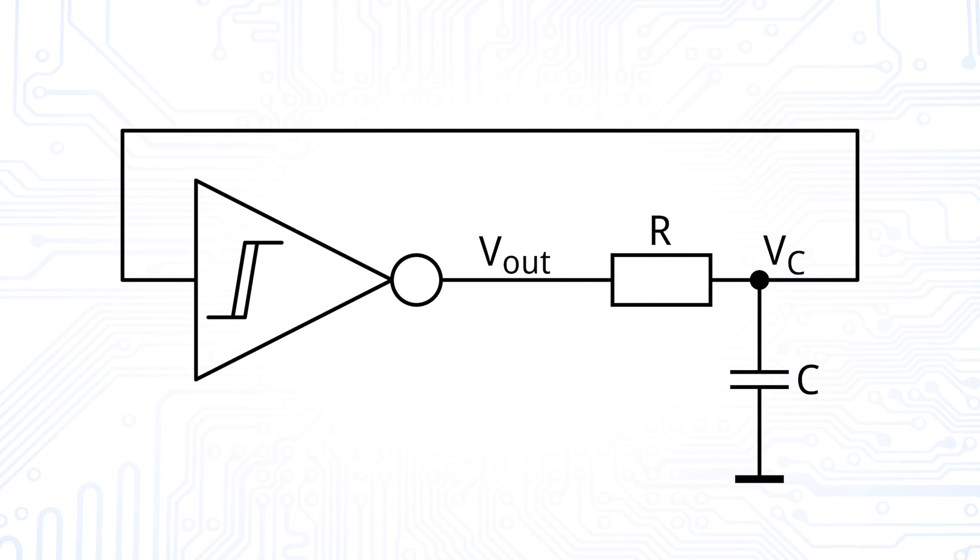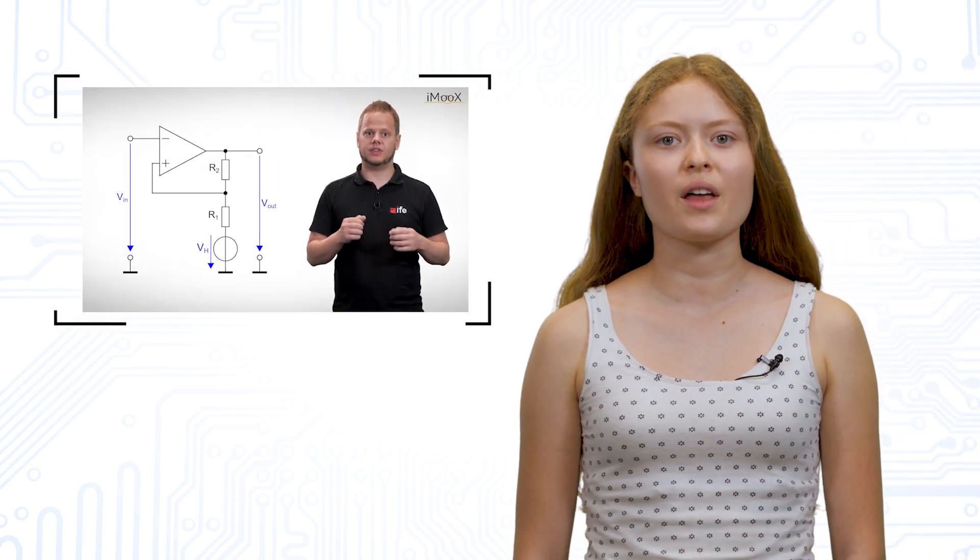Relaxation oscillators can be built by using an inverting Schmitt trigger, followed by an RC low-pass filter. The filtered signal is fed back to the Schmitt trigger input. We already talked about Schmitt triggers in one of our other videos.